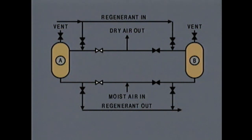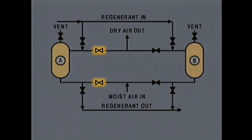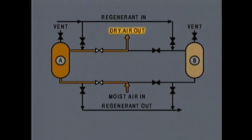This is how the valves are lined up when dryer A is in service. The filled-in valve symbols indicate valves that are closed, so only the remaining valves are open. Moist air enters the system and flows to the bottom of dryer A. Moisture in the air is trapped by the drying agent in the dryer, and dry air flows out of the system.